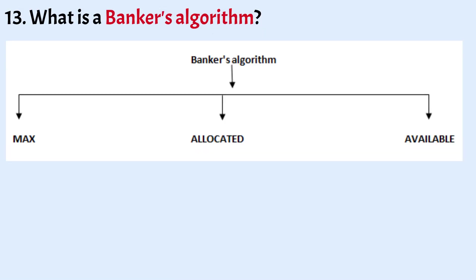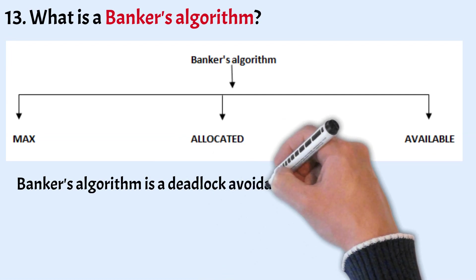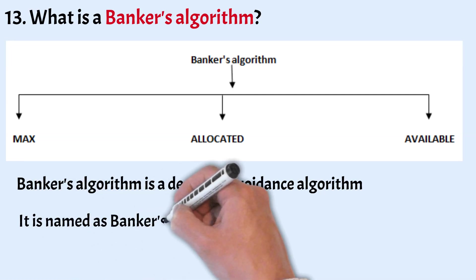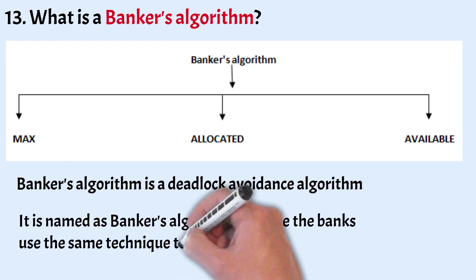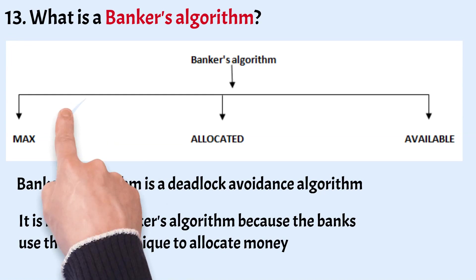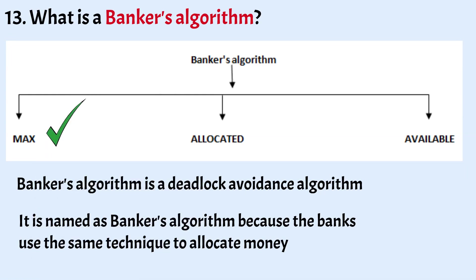What is the Banker's algorithm? Banker's algorithm is a deadlock avoidance algorithm that manages resource allocation. It is named after the banking technique of allocating money to customers so they never run out. It checks three things before allocating resources: how many maximum resources can be requested by each process; how many resources each process currently holds; and how many resources are currently available or not allocated to any process.